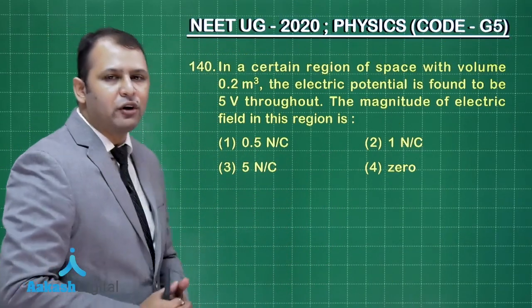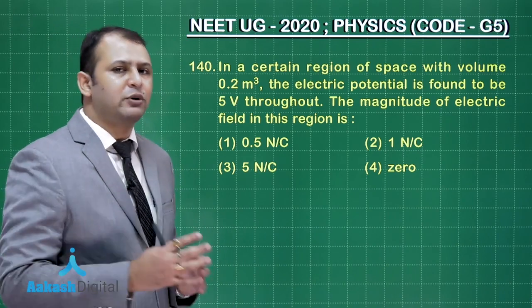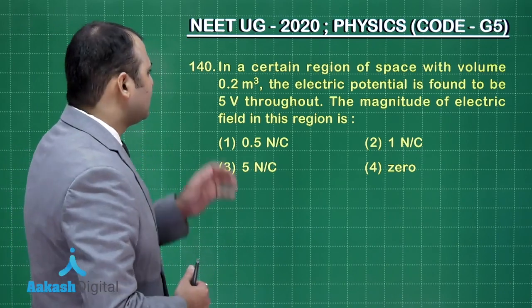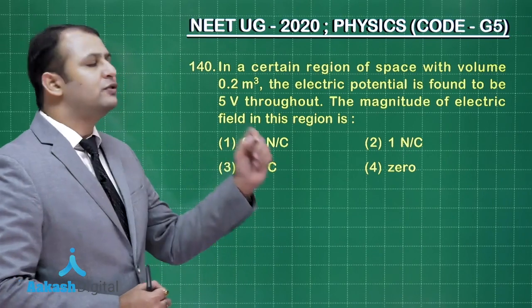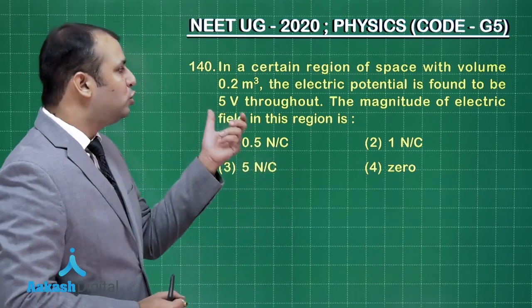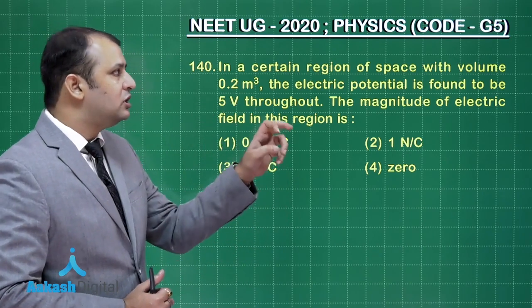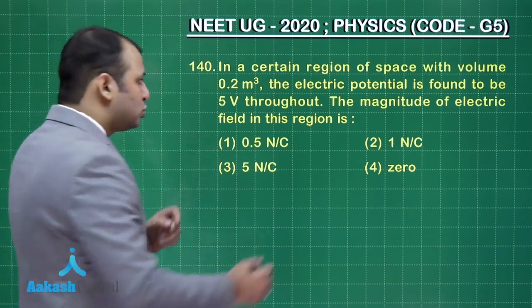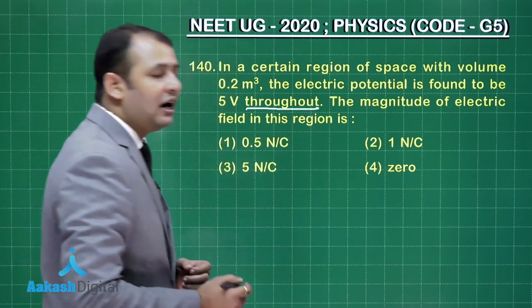Now this question number 148 belongs to chapter electrostatic potential and capacitance. As per the question, in a certain region of space with volume 0.2 meter cube, the electric potential is found to be 5 volt throughout. Please understand and mark this word.